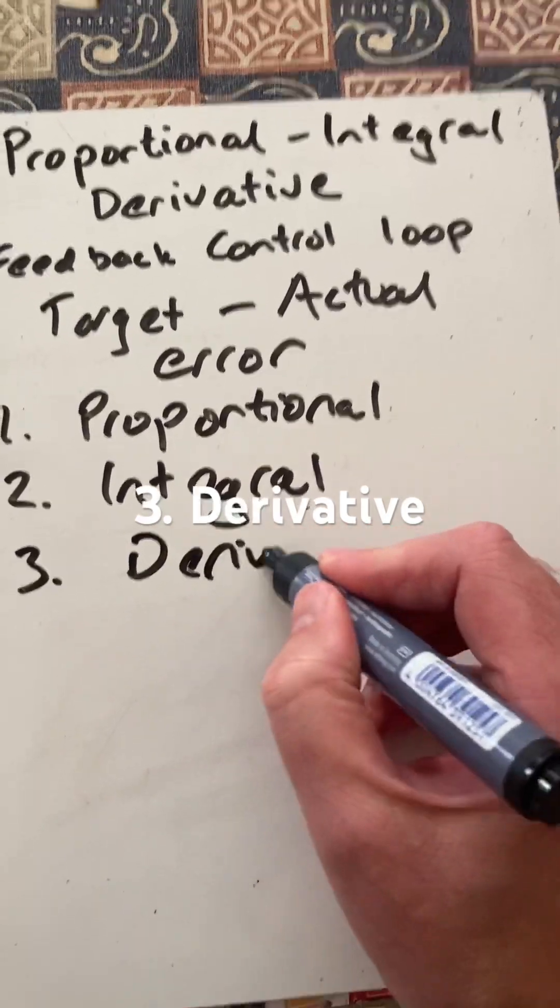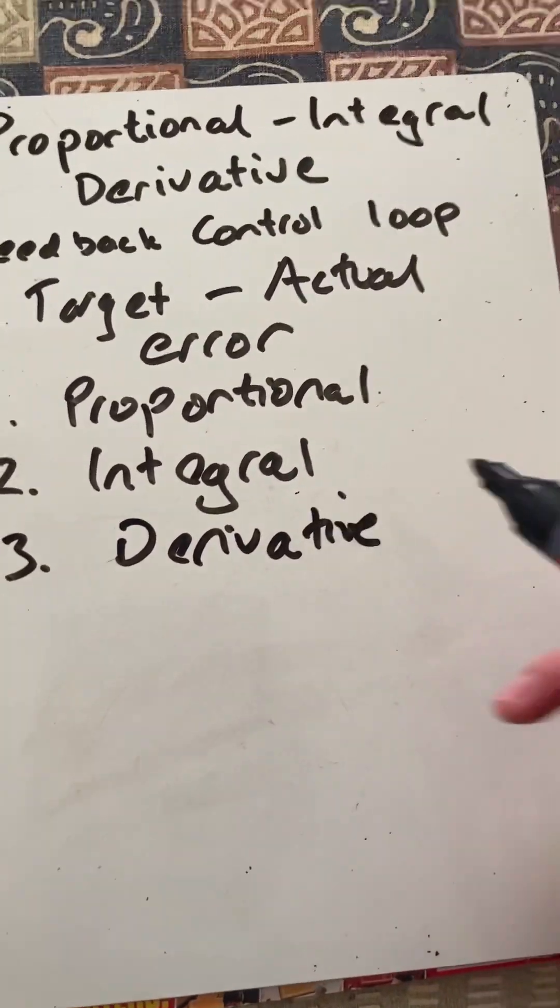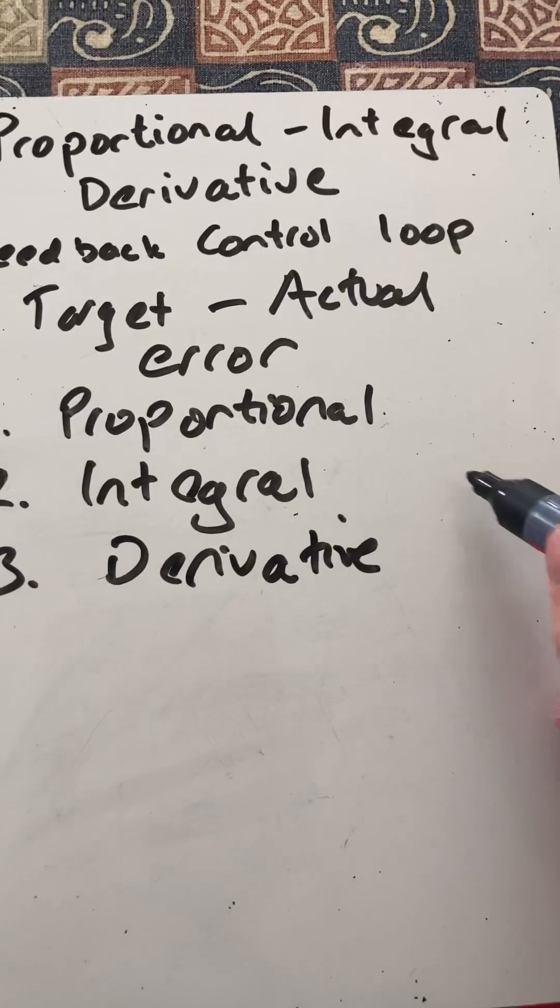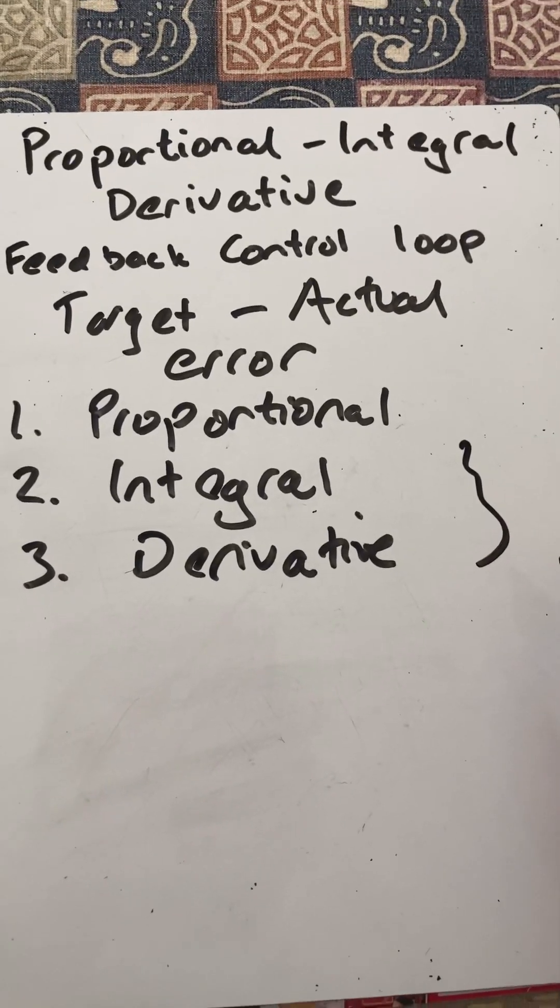And the third way would be the derivative, which will be a forecast of the future errors based on the rate of change. So both of those will involve some calculus.